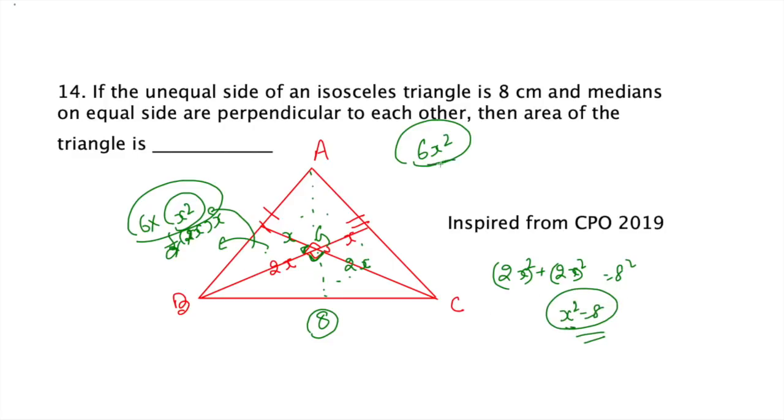We got the value of x² is 8, and we know the area of the triangle is nothing but 6 into 8, that is 48 is the answer. You can solve like this one is 8, this one is 8, this one is 5a², then we get the value of the sides, then we get the answer. That is perfectly fine.